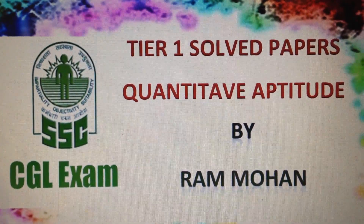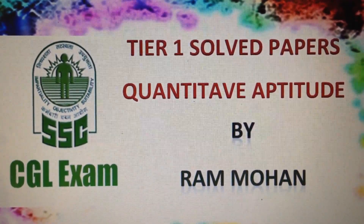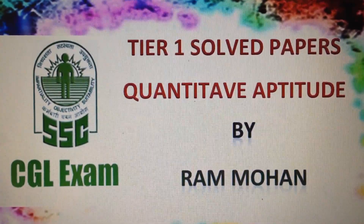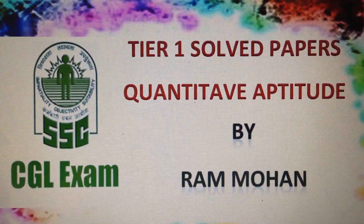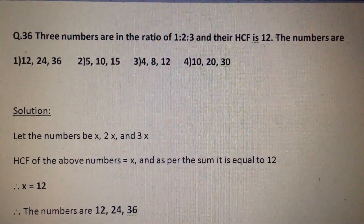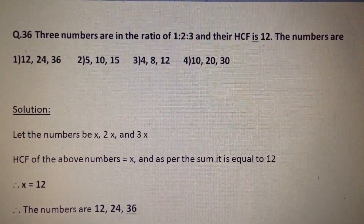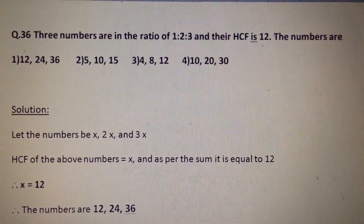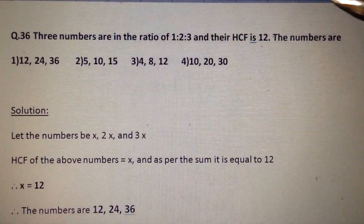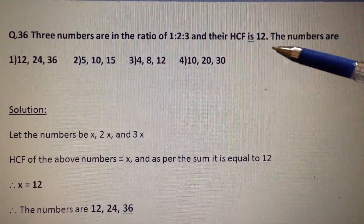Hello friends, welcome back. Hope you have understood the questions in the previous video. Now let us continue with the remaining questions. Next question: three numbers are in the ratio of 1:2:3 and their HCF is 12. What are the numbers?